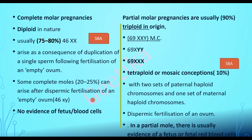How is partial mole different from complete mole? In partial mole, there is genetic makeup from the mother also. That's why it stains with P57 — a paternally imprinted gene. When pathologists are unsure, they perform immunohistochemistry, staining the tissue with the P57 gene. Partial mole takes up the stain because it has maternal chromosomes, whereas complete mole doesn't stain because all chromosomes are paternal in origin.